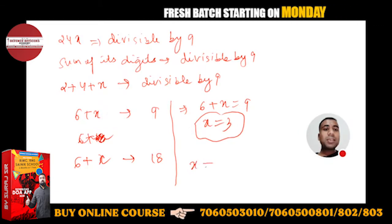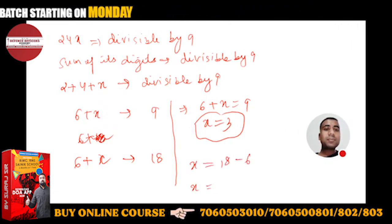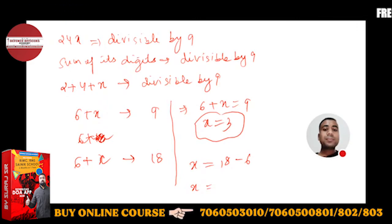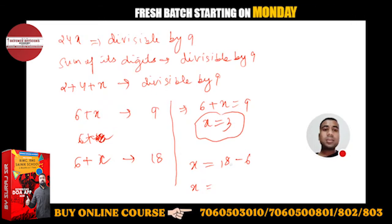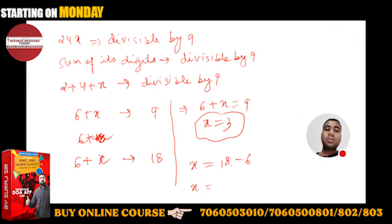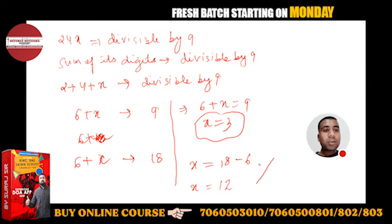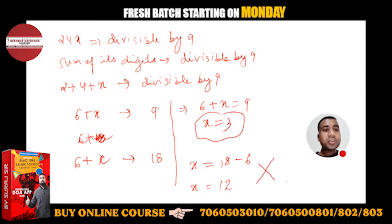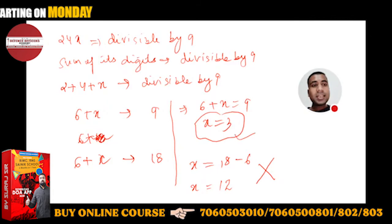If 6 plus x equals 18, then x would be 12, which is not possible because x should be a single-digit number. So 3 is the right answer.